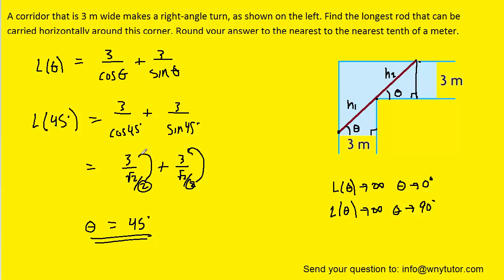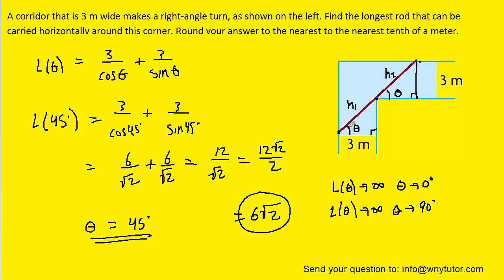Algebraically, these 2s will be moved to the numerator and multiplied by 3. So we'll get 6 over root 2 plus 6 over root 2. That's going to give us 12 over root 2. If we rationalize the denominator, we get 12 root 2 over 2, which, of course, simplifies to 6 root 2. So this is the length that will allow the rod to be moved around the corner of this corridor.